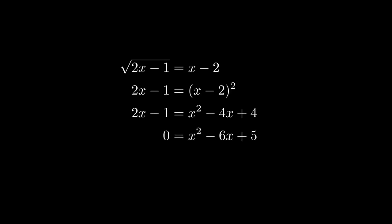Here's an example of that. Suppose I gave you the equation root 2x minus 1 equals x minus 2. The first thing you could do is square both sides to get rid of the radical on the left. Then we might multiply out the term on the right and move everything over to the same side of the equal sign.